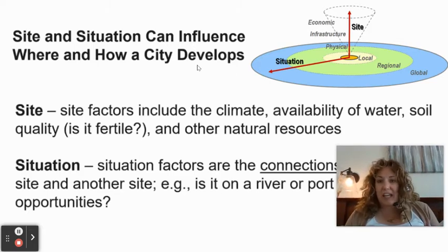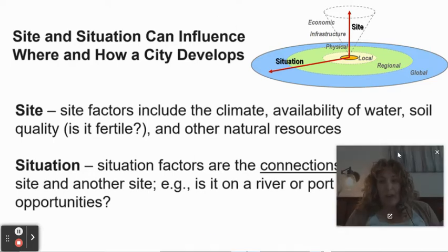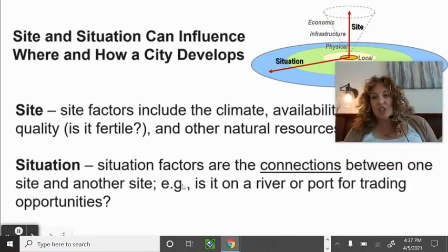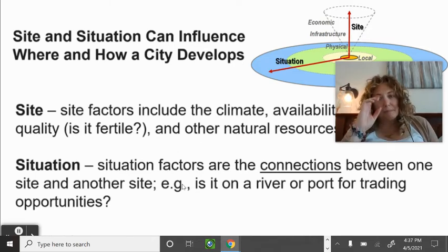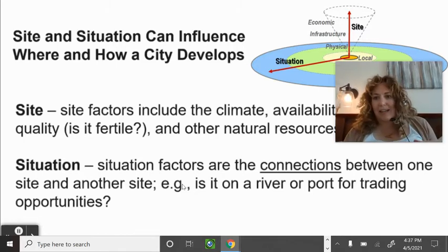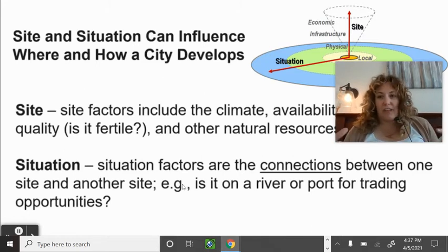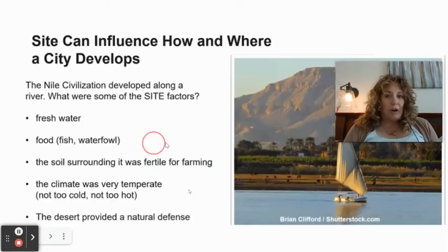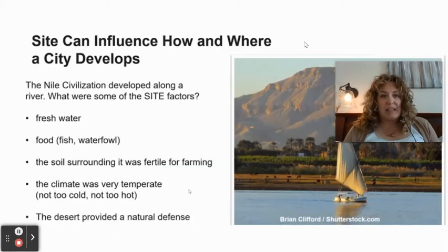Site factors include the climate, availability of water, soil quality — like fertile soil — and other natural resources. Situation is like the connections to another place: is it on a river port for trading opportunities, are there major transportation routes? Site is usually the physical geography of what's occurring naturally, and situation is more about how a place is connected in relation to other places.